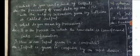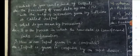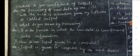Number second, what do you mean by processing? It is the process in which the raw data is transformed into information. Number third, how is an output given to a computer? Input is given to computer by an input device.